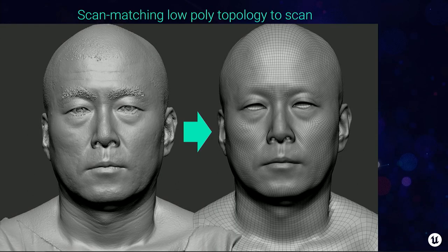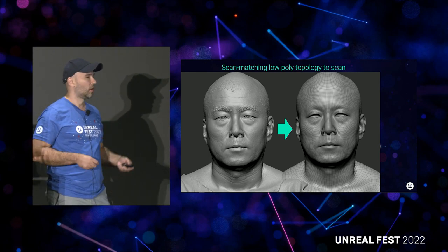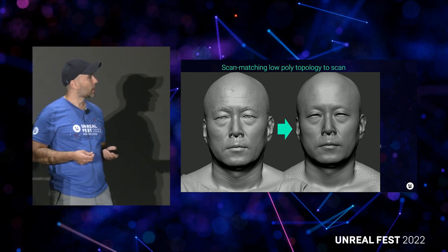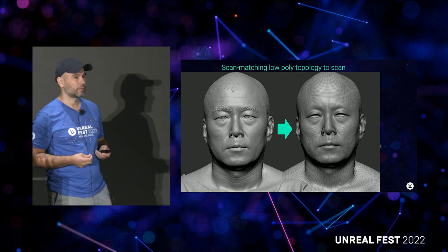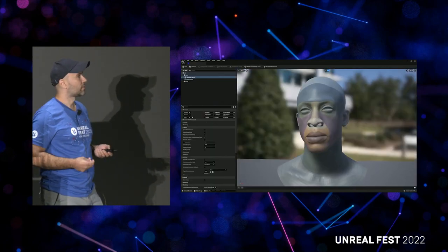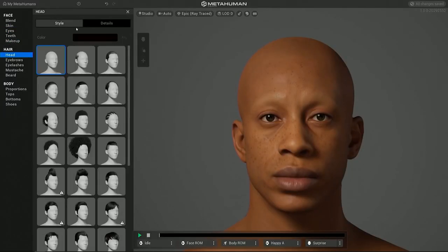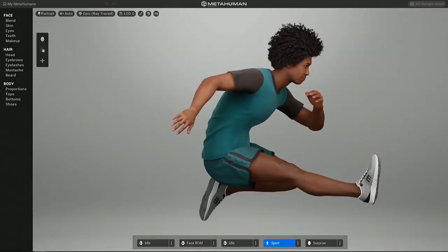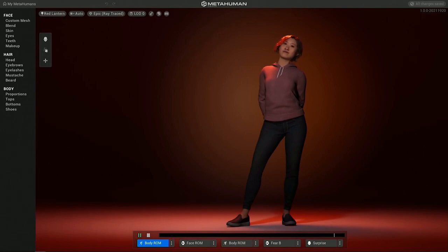In reality, we understood that users would want more control over the nuanced characteristics of their protagonists. The solution was the same way we used to do it for years as a service — by incorporating the scan likeness of a client's choice into the rig. With the introduction of the Mesh to MetaHuman plugin for Unreal Engine 5, you could now feed your own scan to the tool, and with just a couple of clicks within minutes, transform any specific likeness into a MetaHuman. While in the cloud, you could assign textures, hair, and clothing, then download the game-ready asset from Quixel Bridge.